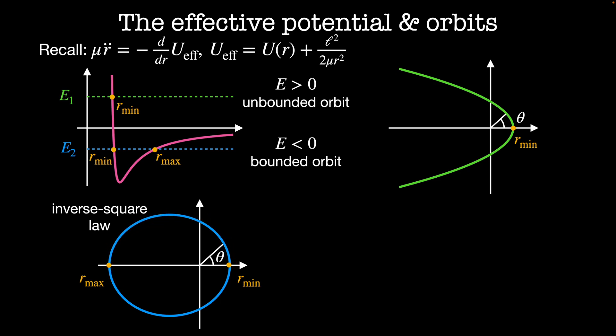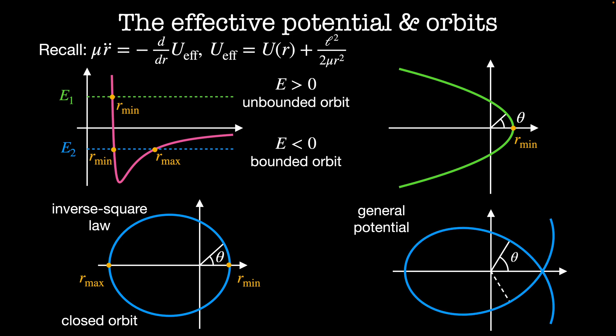Since after traveling one period in this orbit, the particle returns to the place it started from, this is called a closed orbit. Potentials that are not inverse square laws or Hooke's law potentials generally do not close. For such a general potential, there might be many points along the orbit where the particle is at the distance of closest or furthest approach. There is not typically a place where these orbits repeat themselves, so we say these orbits do not close.